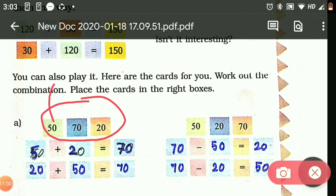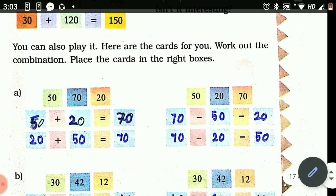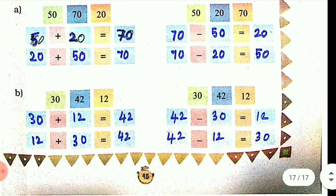So in the same way, see here, you have 50, 70, and 20. If you add 50 and 20 you will get 70. If you subtract 20 from 70 you will get 50. See this, if you subtract 20 from 70 you will get 50. These combinations you have to write. Second sum: 30 plus 12 is 42, 12 plus 30 is again 42, 42 minus 30 is 12, 42 minus 12 is 30.